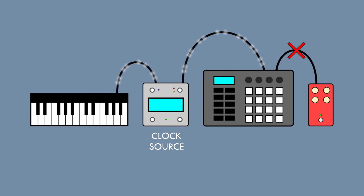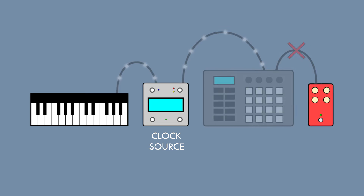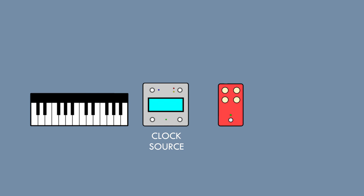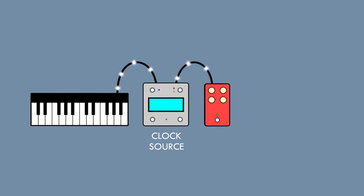One quick way of diagnosing an issue with through is to change the order the devices are hooked up in. If the device that's having trouble is near the end of the MIDI daisy chain, put it right after the device that's generating clock instead and see if it suddenly begins working.